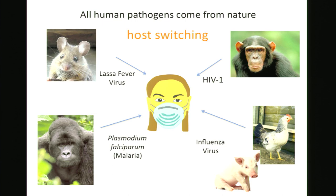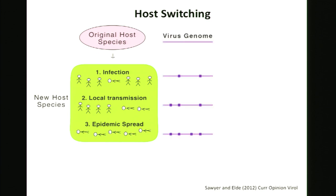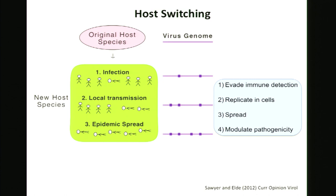When pathogens switch from one host to another, this is called host switching. When the new host is humans, we give this a special name: zoonosis. New diseases arise when a virus of one species infiltrates a second host species. This may lead to a small local transmission chain, and sometimes this could result in epidemic spread. We understand this to be a multi-step process where the virus genome is selected for mutations. But zoonosis is relatively rare, so it's important we think about how this process begins.